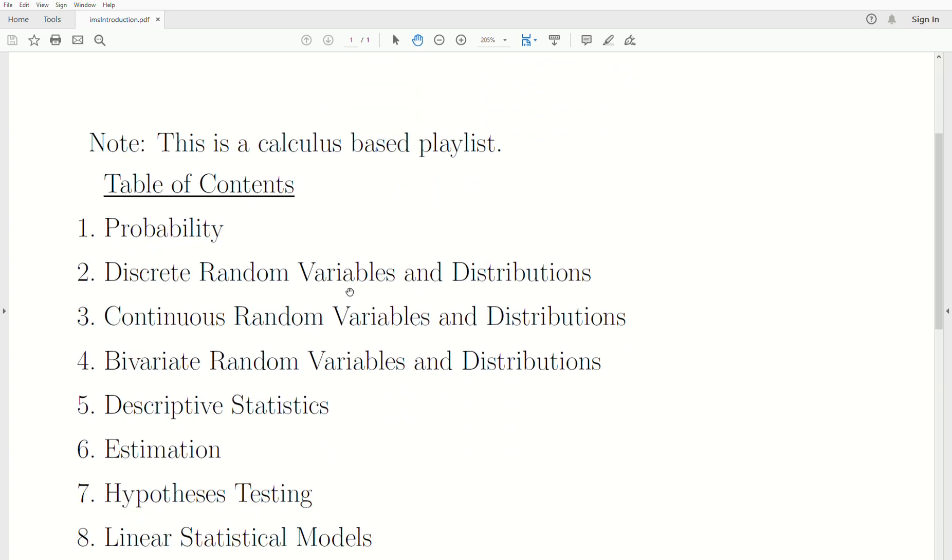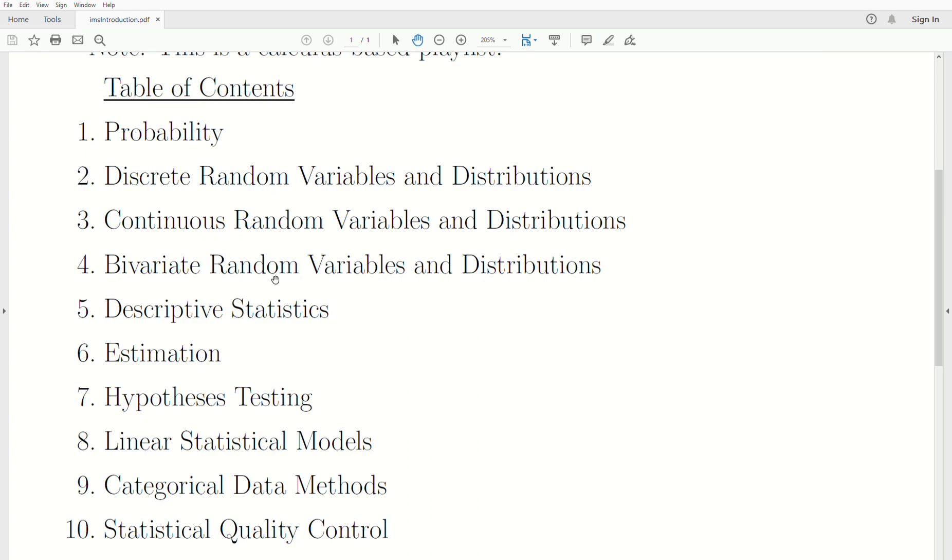Now, the table of contents, there's going to be 10 chapters. The first one is probability. It deals with combinations, permutations, a little bit of set theory, probability theory.